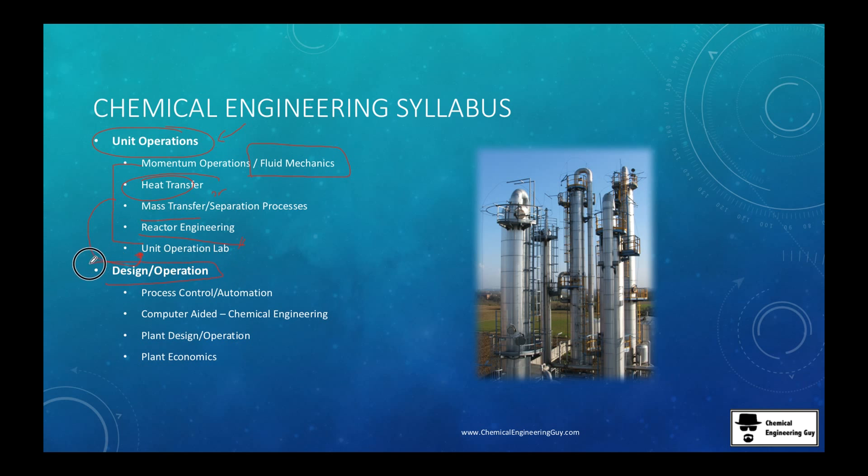Now for the design and operation block, which is the last one, you will see process control and automation because these columns - well, you want them to be in steady state and the best way to do that is with a computer and automation of processes instead of having one guy going up to close the valve - you have a system that closes automatically.